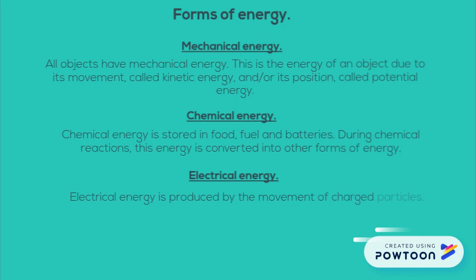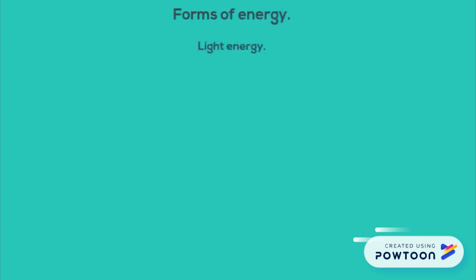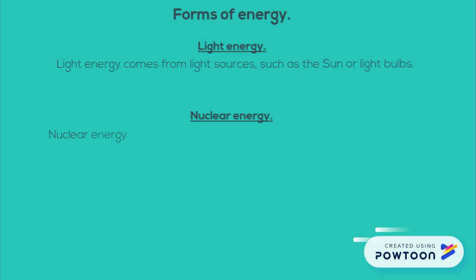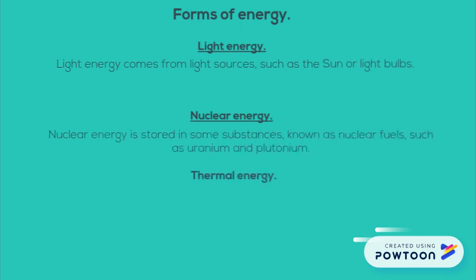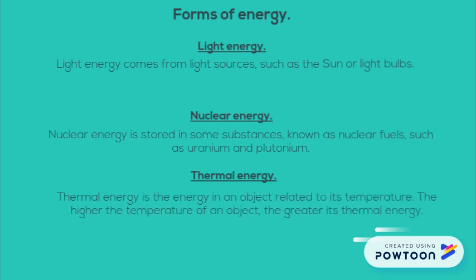Electrical energy is produced by the movement of charged particles. Light energy comes from light sources, such as the sun or light bulbs. Nuclear energy is stored in some substances known as nuclear fuels, such as uranium or plutonium. And thermal energy is the energy in an object related to its temperature — the higher the temperature of an object, the greater the thermal energy.